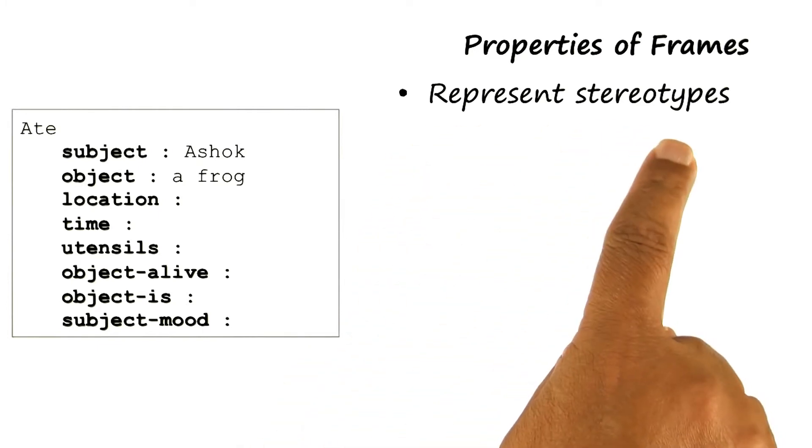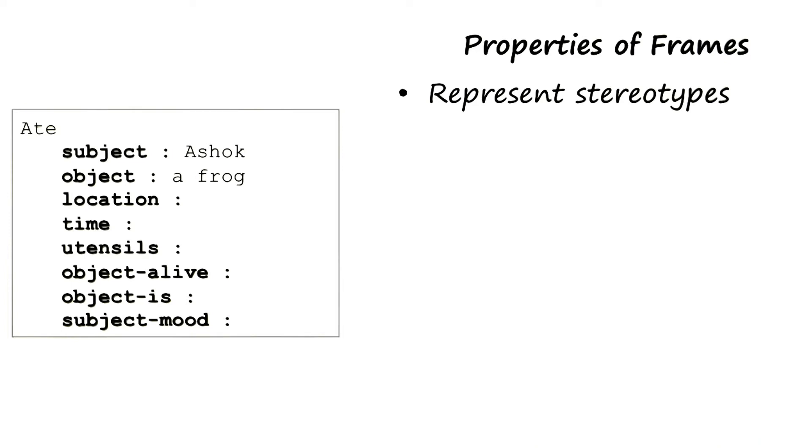Now we all know about stereotypes, we deal with stereotypes all the time. Here is a stereotype for the verb eat, or ate. In this particular stereotype, the slots are dealing with my stereotypical notion of what happens when something is eaten. There is a subject and there is a frog, there is a location, there is a time. You may have a different set of stereotypes. In fact, stereotypes often are very culture specific.